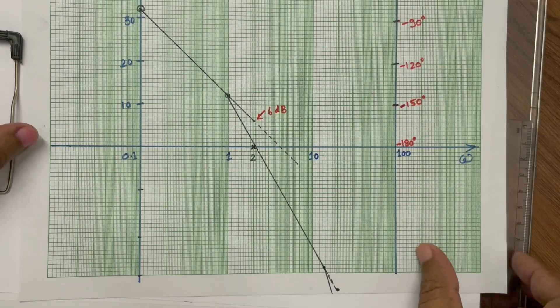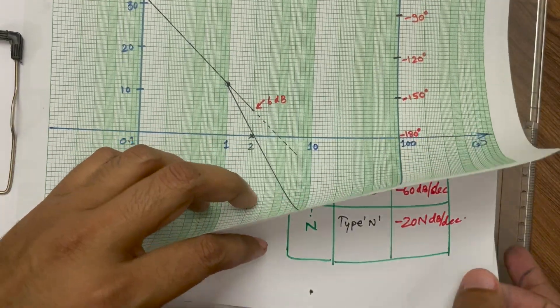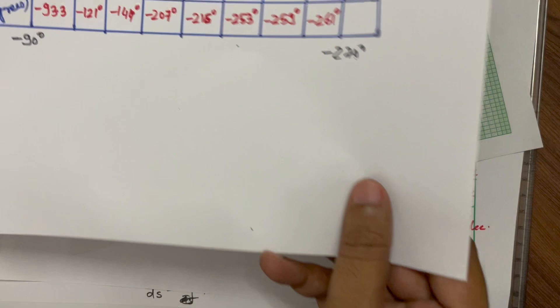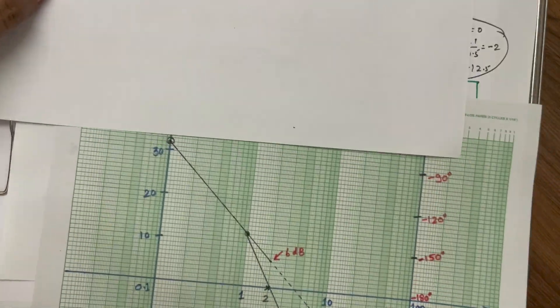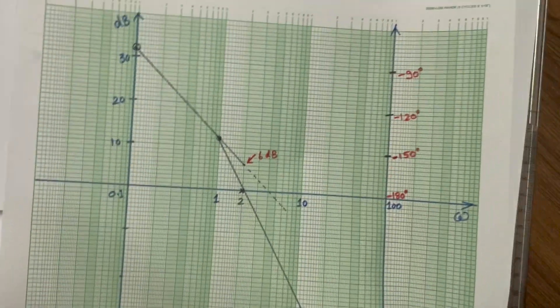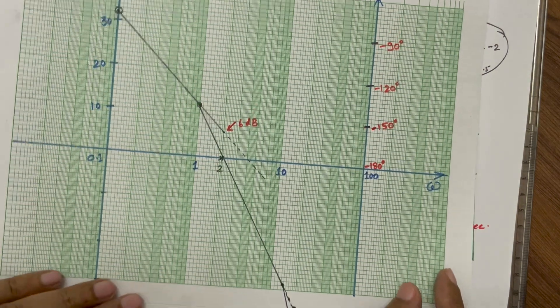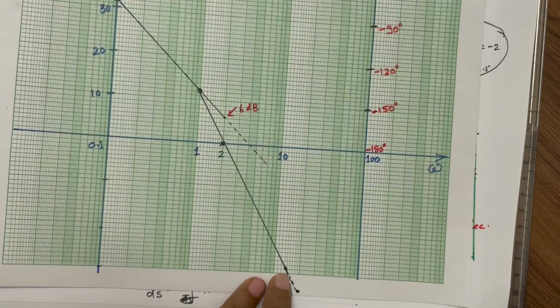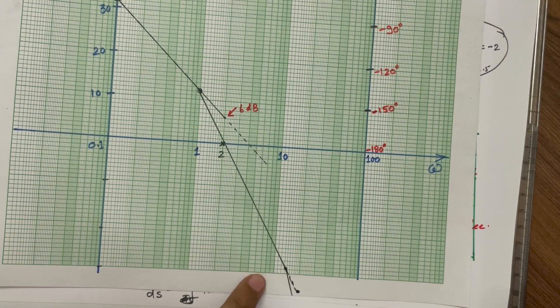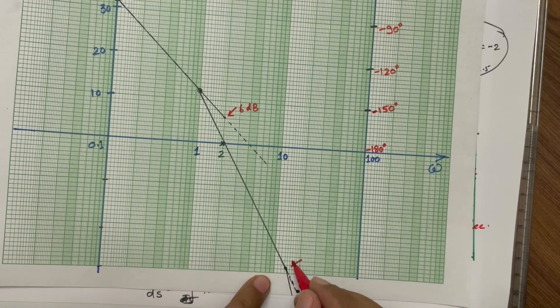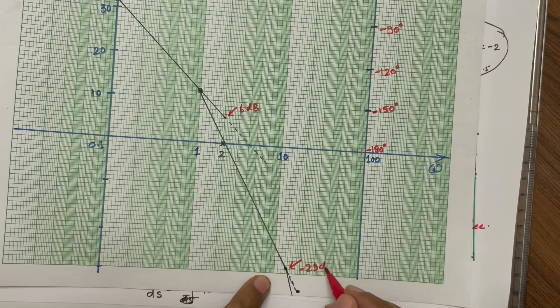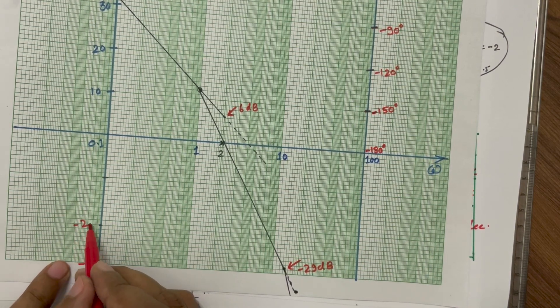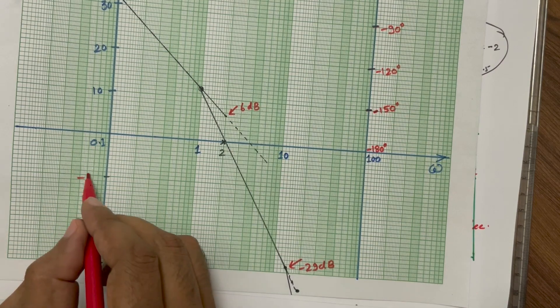Now we are going to plot the angle, so for angle, whatever angle we have calculated, that we will be identifying along with this and also we can match the value, at 12.5 we are expecting minus 29, we can see, at 12.5 we are getting this minus 29. This is the value is minus 29 dB, because this is minus 30, minus 20 and minus 10.